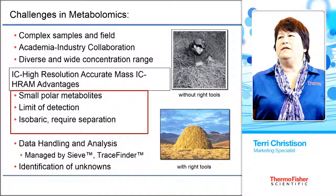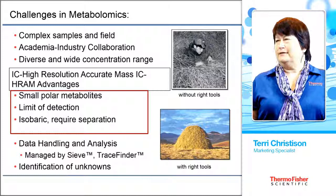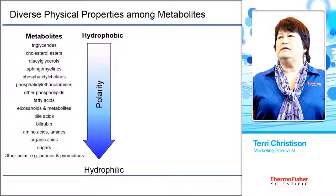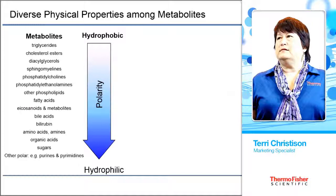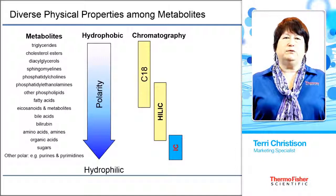Without tools, metabolomics has often been described as looking for a needle in a very large haystack. With the right tools, it's a very large different-colored needle in the haystack. Metabolites have very diverse physical properties, from triglycerides to very polar compounds like organic acids, sugars, and nucleotides — from hydrophobic to hydrophilic — and it requires different chromatography separation methods: reverse phase, HILIC, and of course ion chromatography, which we're going to talk about here today.